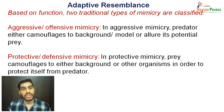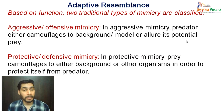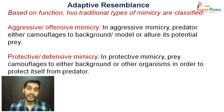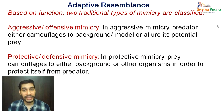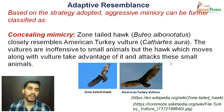Based on function, two traditional types of mimicry are classified: aggressive or offensive mimicry, and protective or defensive mimicry. In aggressive mimicry, the predator camouflages to the background or model, or allures its potential prey — so the predator is acting as the mimic. In protective mimicry, the prey camouflages to the background or other organisms in order to protect itself from the predator — so in protective mimicry it is the prey which is acting as the mimic.